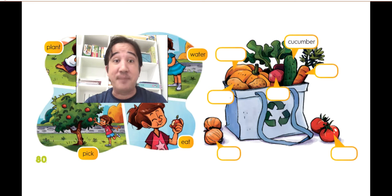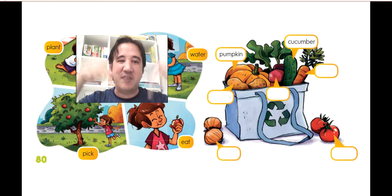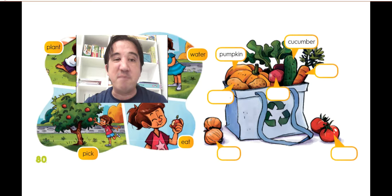The first one here on the top is the cucumber. Cucumber. Here we have a big pumpkin. Pumpkin here in Sierra, we call it jerrymoon, jerrymoon, yes, something like that. Pumpkin, pumpkin.